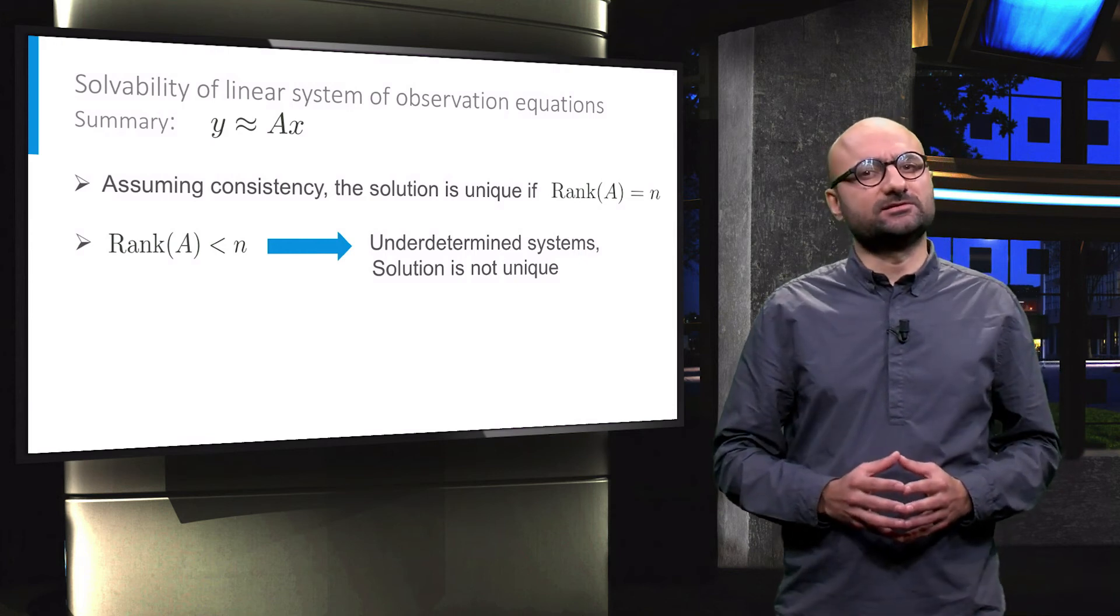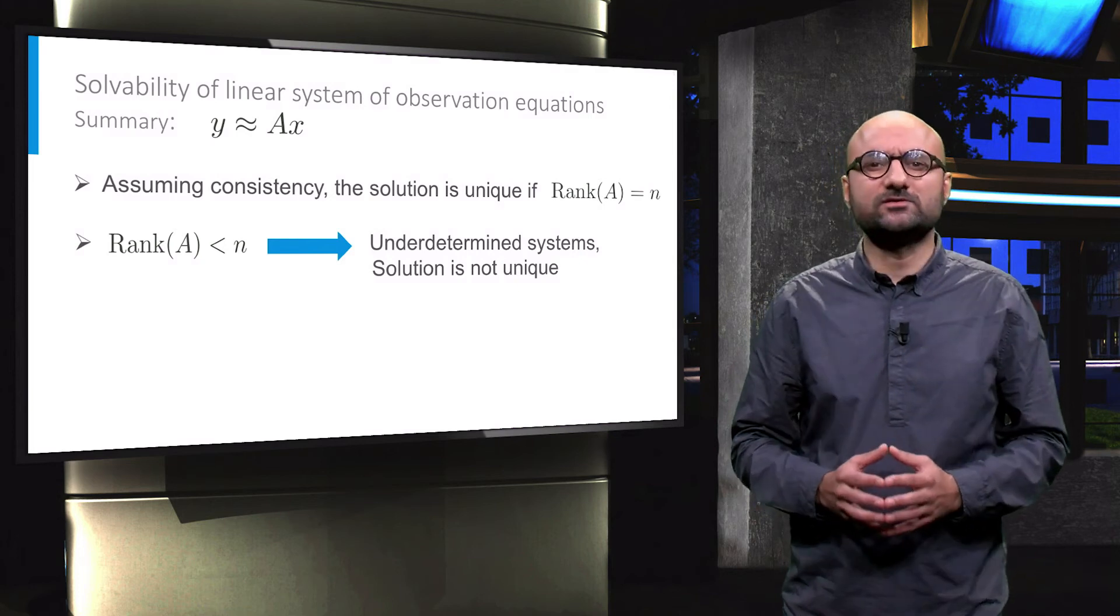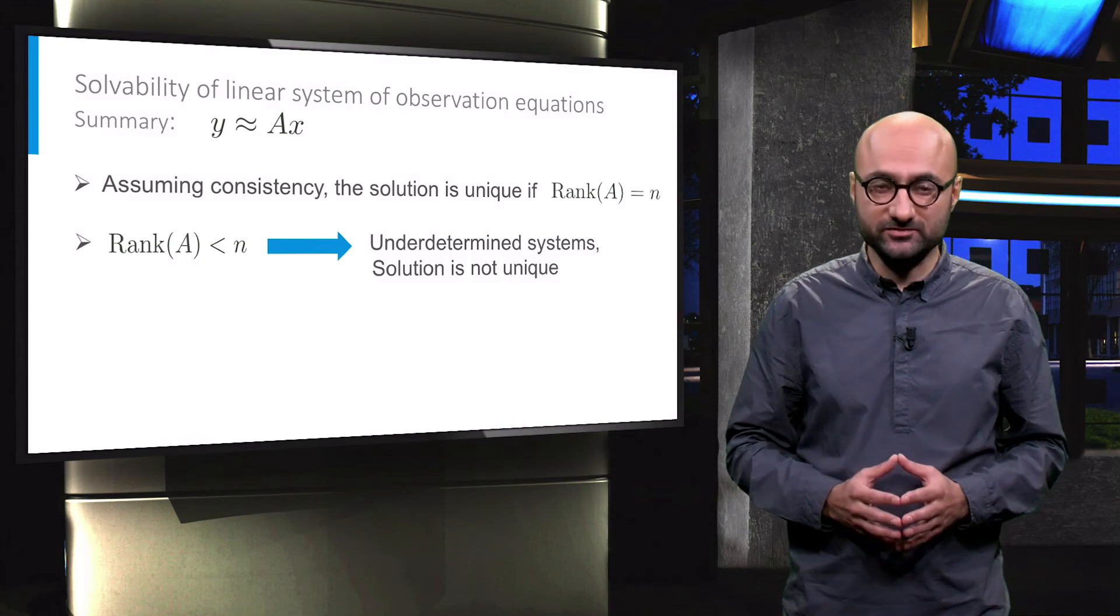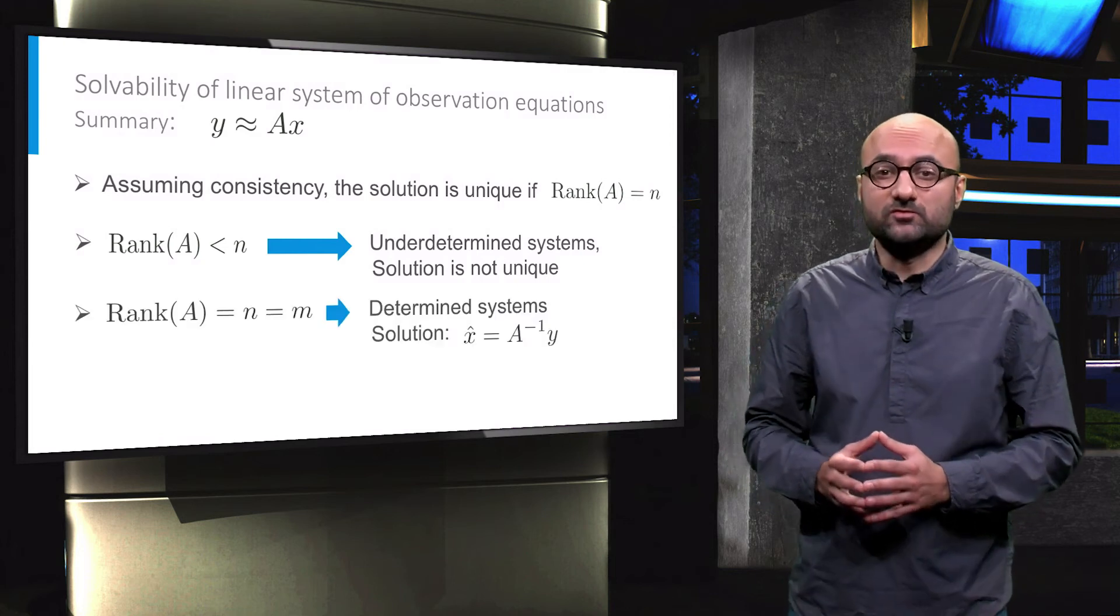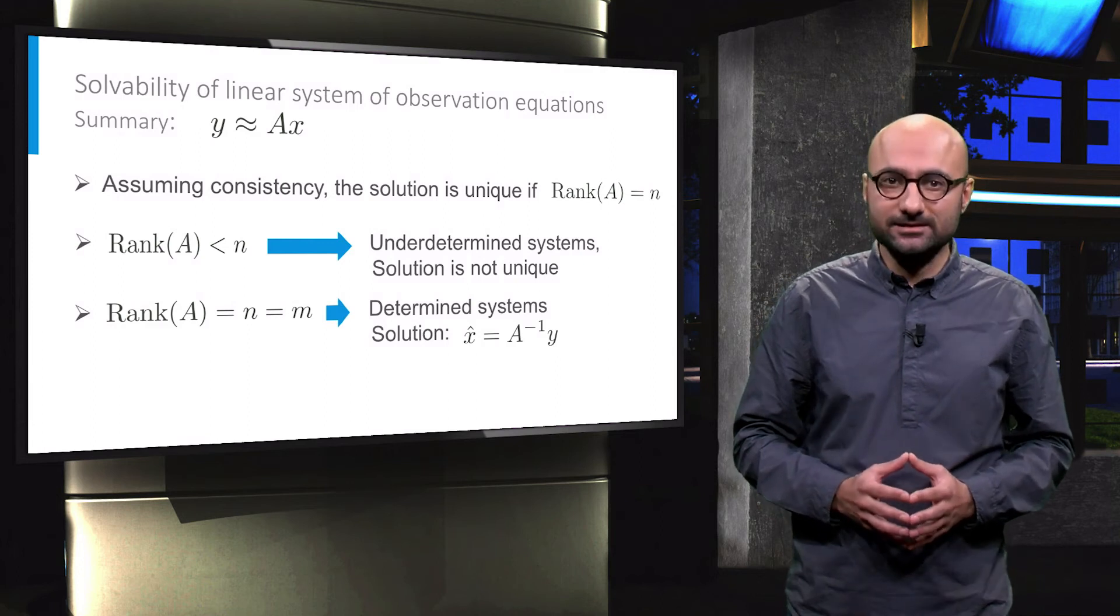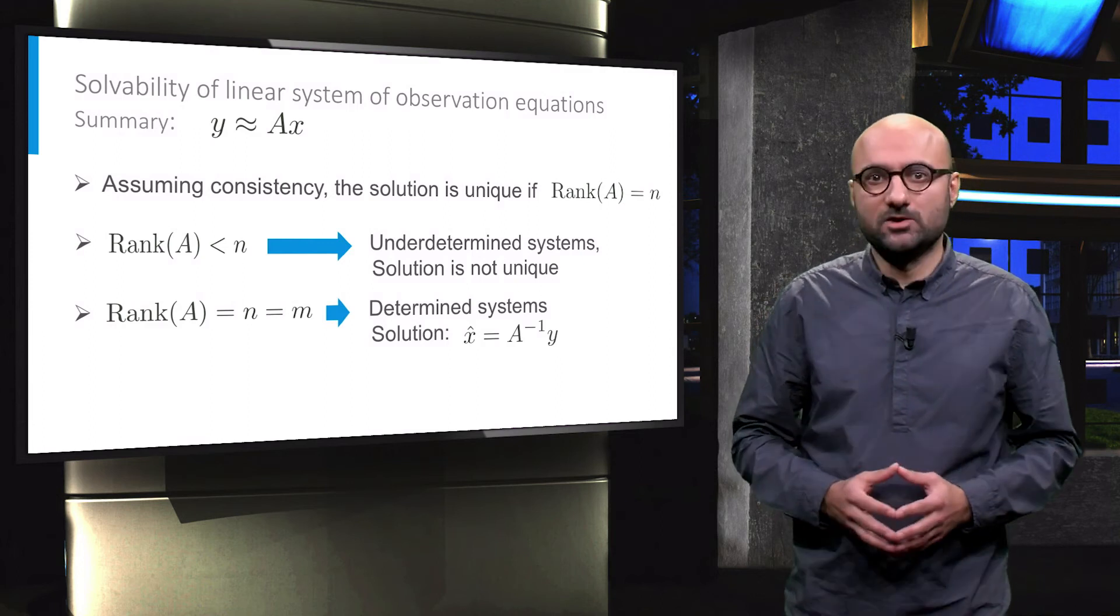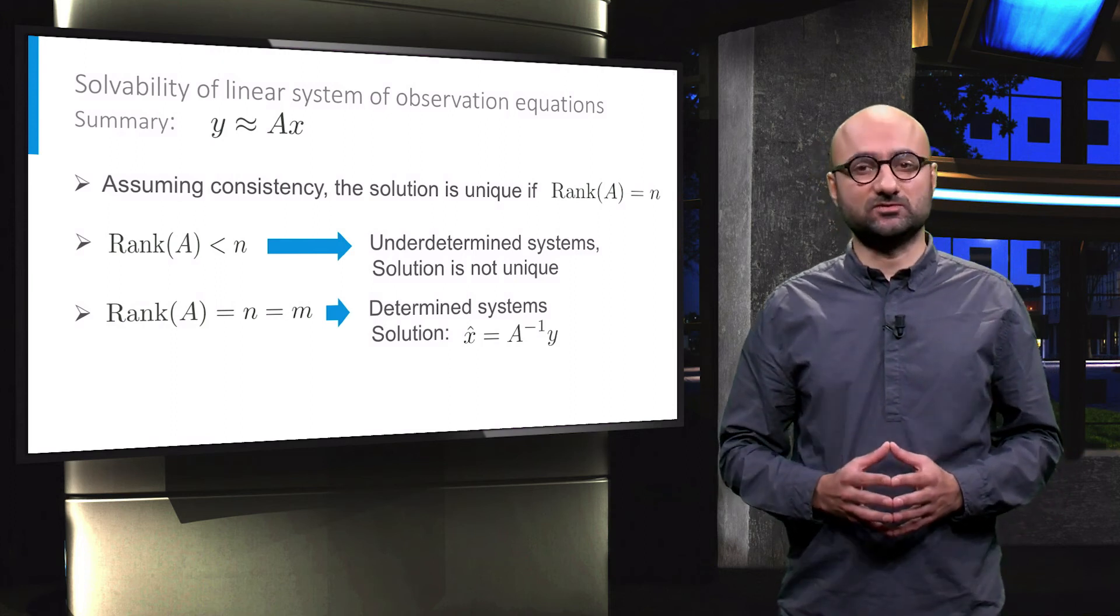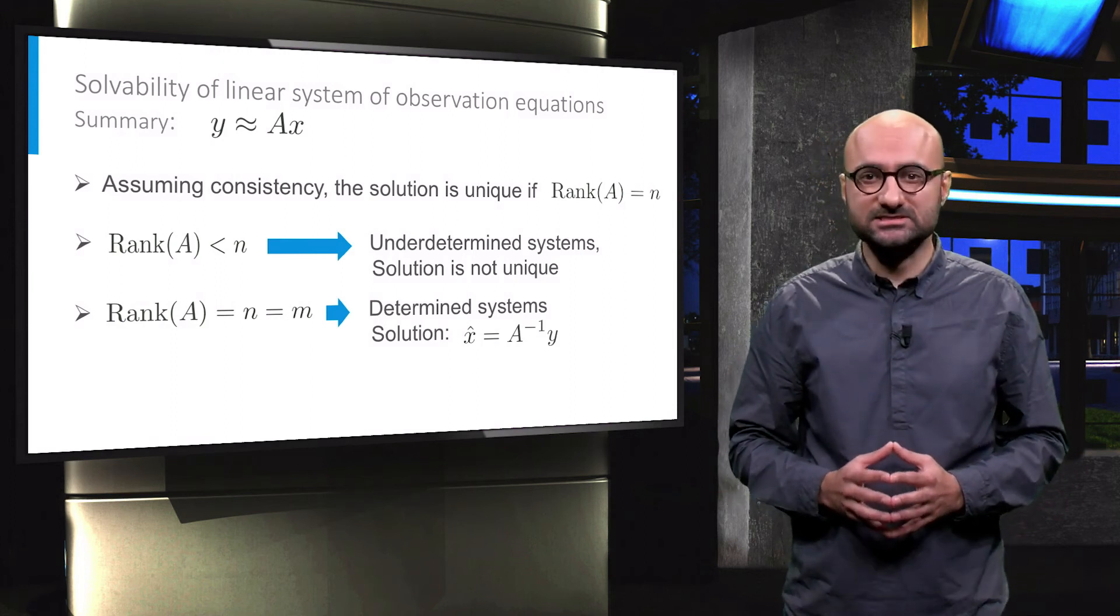Under-determined systems are not discussed further in this course. For the full column rank systems with the rank of A equals n and equals to m, or when we have the same number of observations and unknowns, the system is determined and the unique solution can simply be computed as x-hat is equal to the inverse of A multiplied by y.